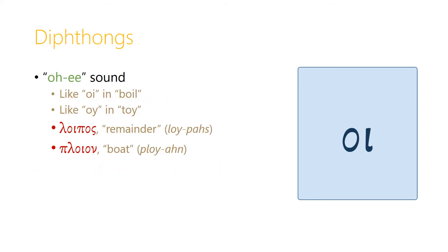The diphthong omicron-iota in Greek is pronounced 'oi', like in 'boil' or 'toy', and so we have the word 'loipos', which means 'remainder', or the Greek word for 'boat', which is pronounced 'ploion'.